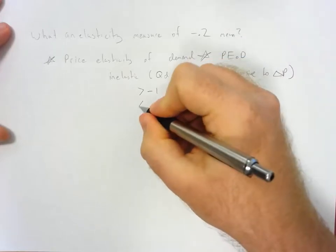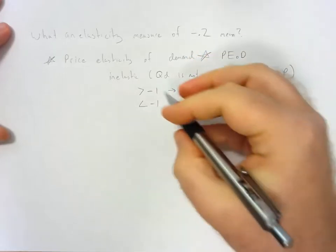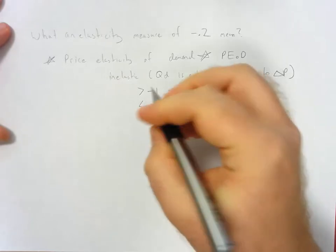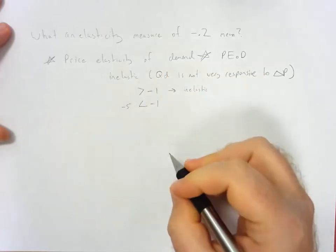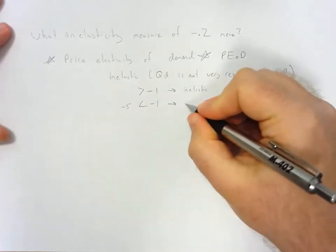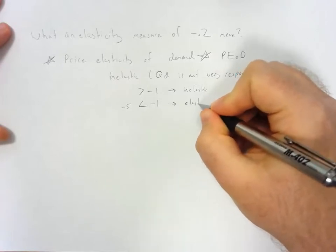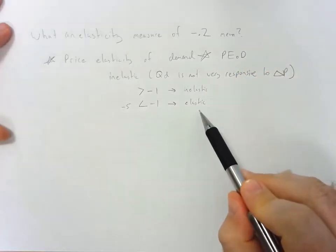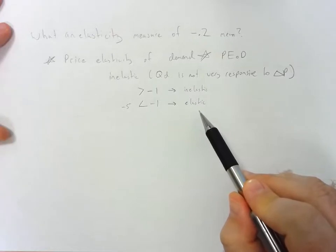If it were less than negative 1, and this is a little bit confusing, but you could imagine like negative 5 or something like that, then it would be considered elastic. And this means that it would be very responsive to changes in price.